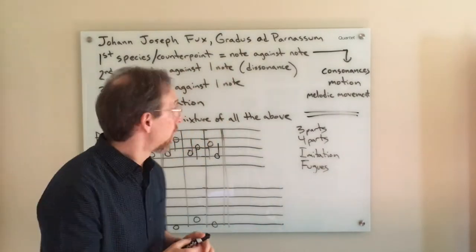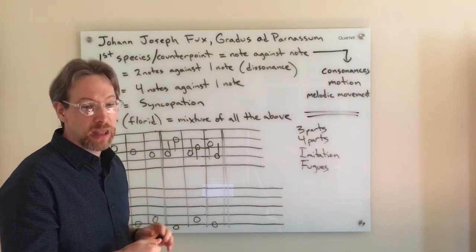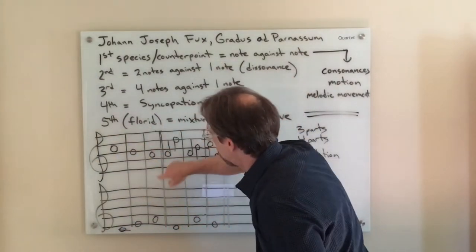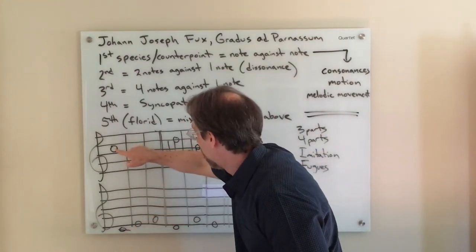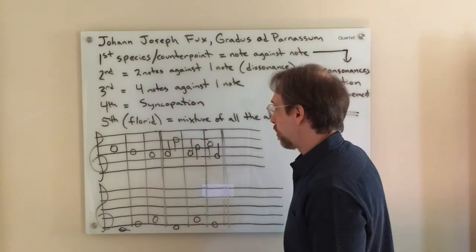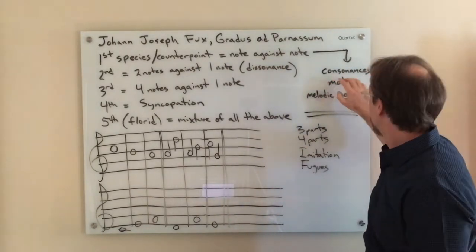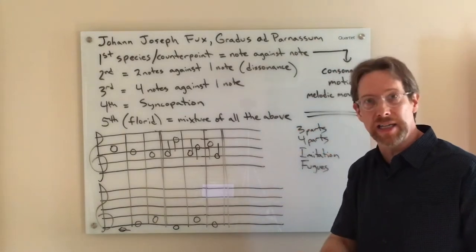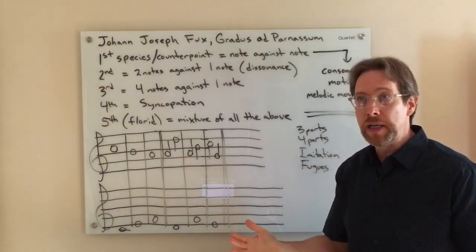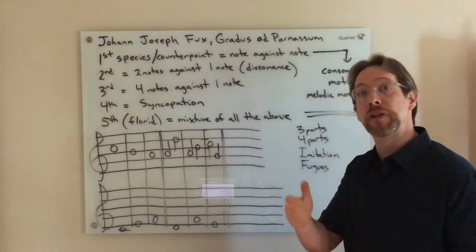So let's take a look. So the first thing Fux does is he talks about first counterpoints. This is sometimes called first species counterpoint. And the whole point of this is note against note, which looks a little bit like these three measures I have right here, where you have a note against another note. So it's often written in whole notes so you can see how they relate to each other. And what Fux does is he starts to talk about how to use consonances. He differentiates between what count as consonances and what count as dissonances. This is not something you can just take as a given. During the Middle Ages, there were slightly different concepts of consonance and dissonance than there was during the Renaissance, for example.